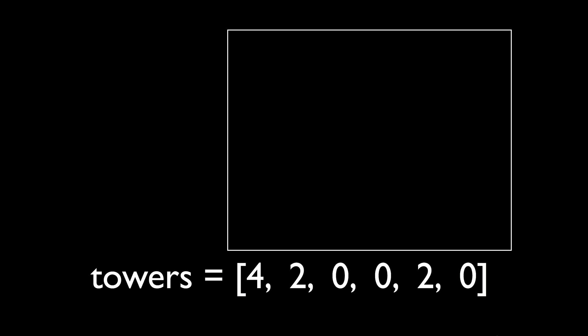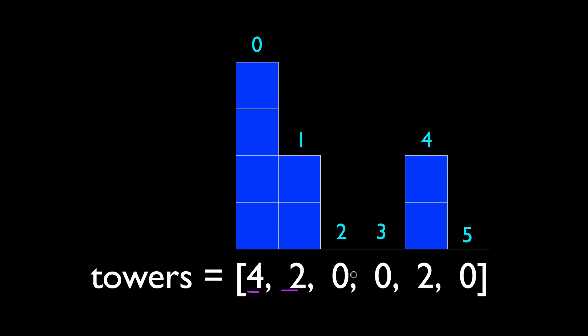Here's one of my favorite coding interview problems that I've seen so far, and I'm going to call it the tower hopper problem. You're given an array of integers, and each integer represents the height of the tower in that position. With this given array, we have six towers with the heights 4, 2, 0, 0, 2, and 0. The numbers at the top are just the indexes for the towers.